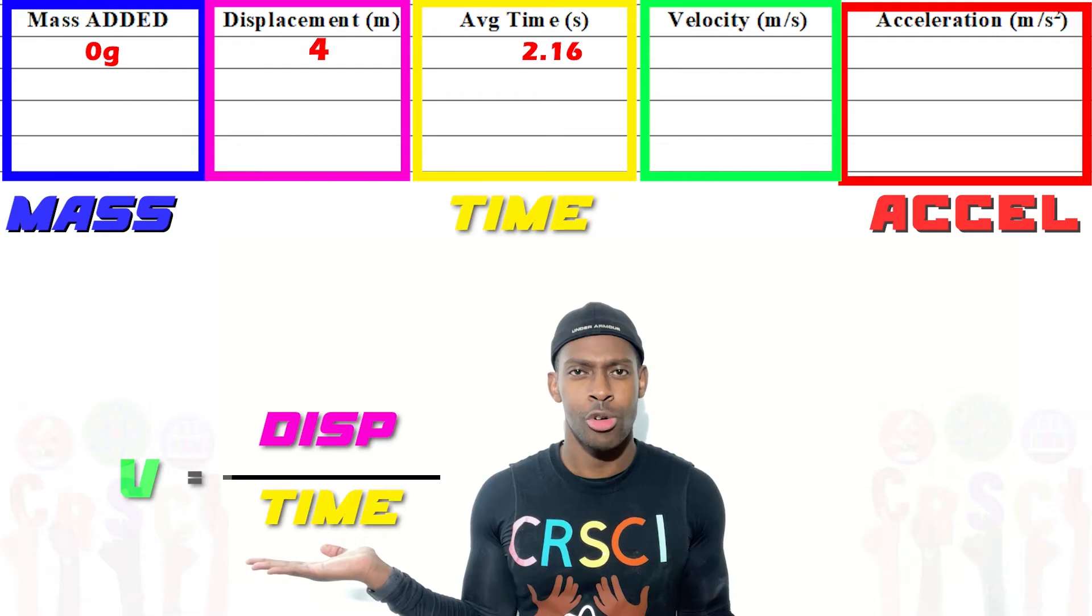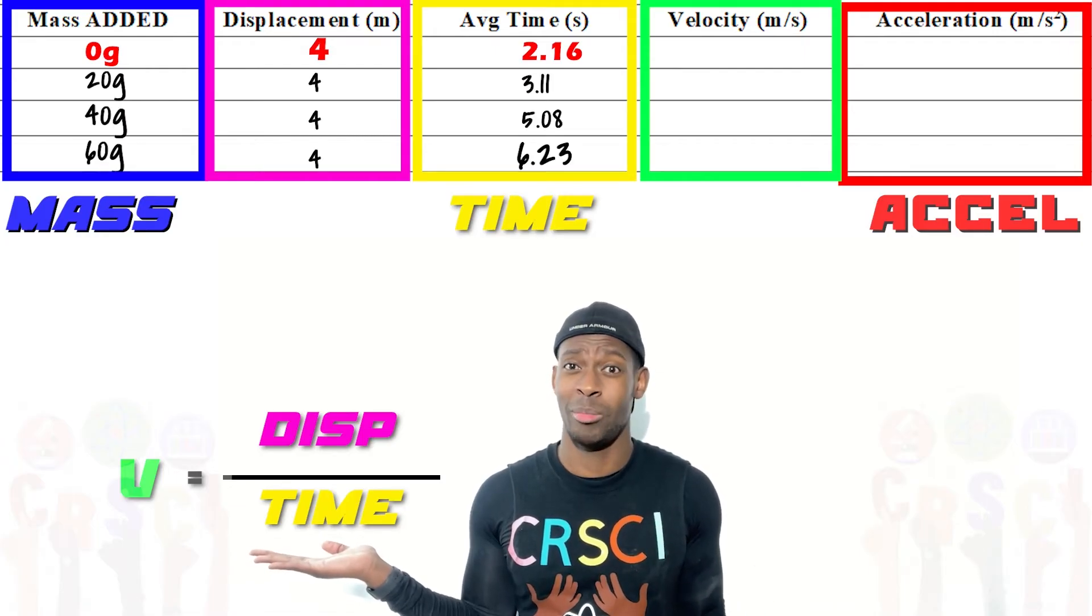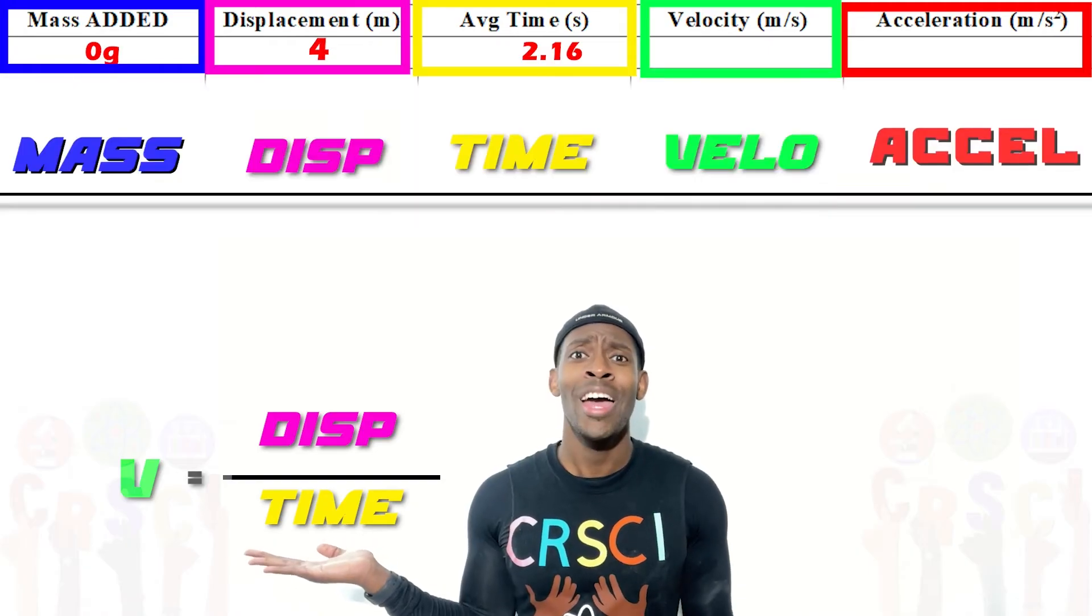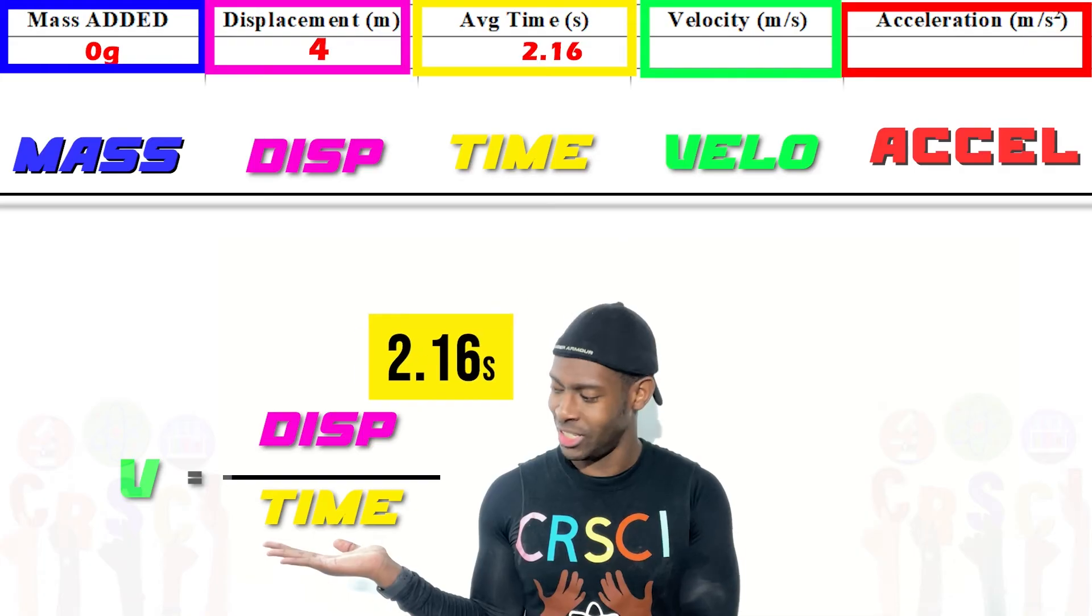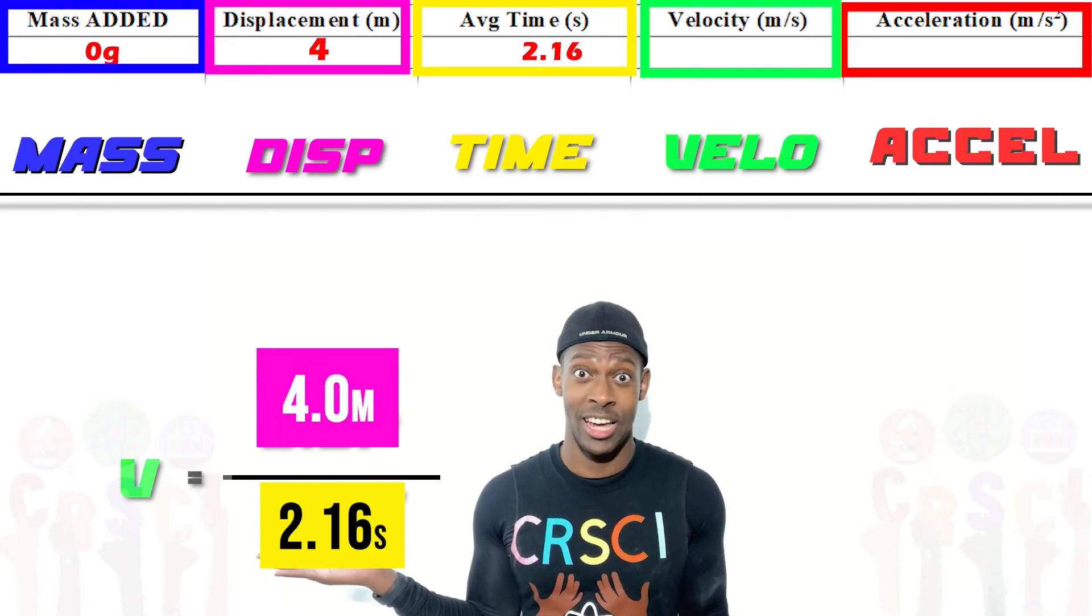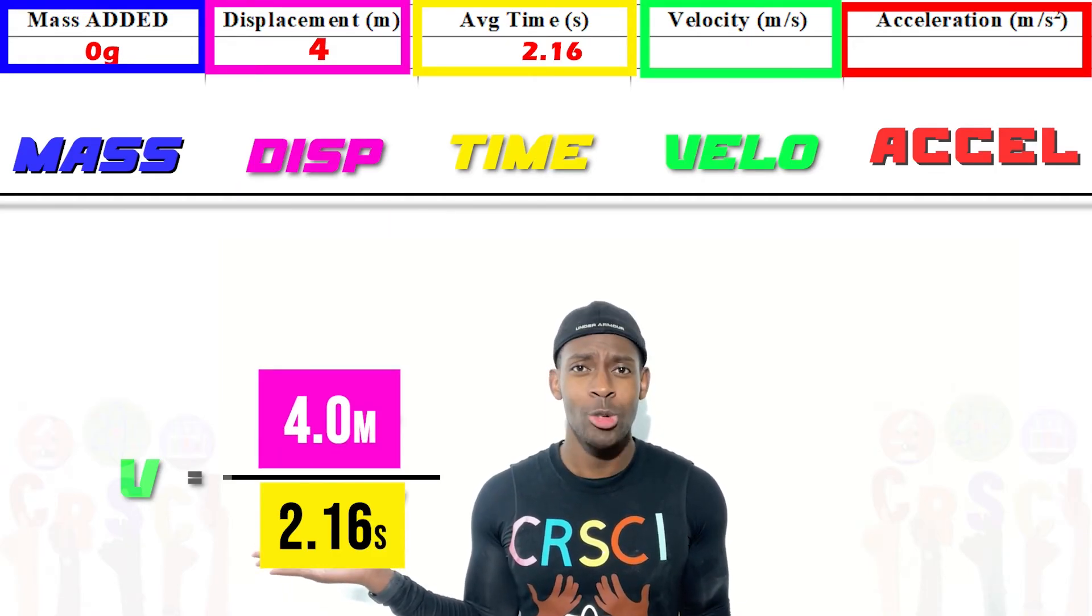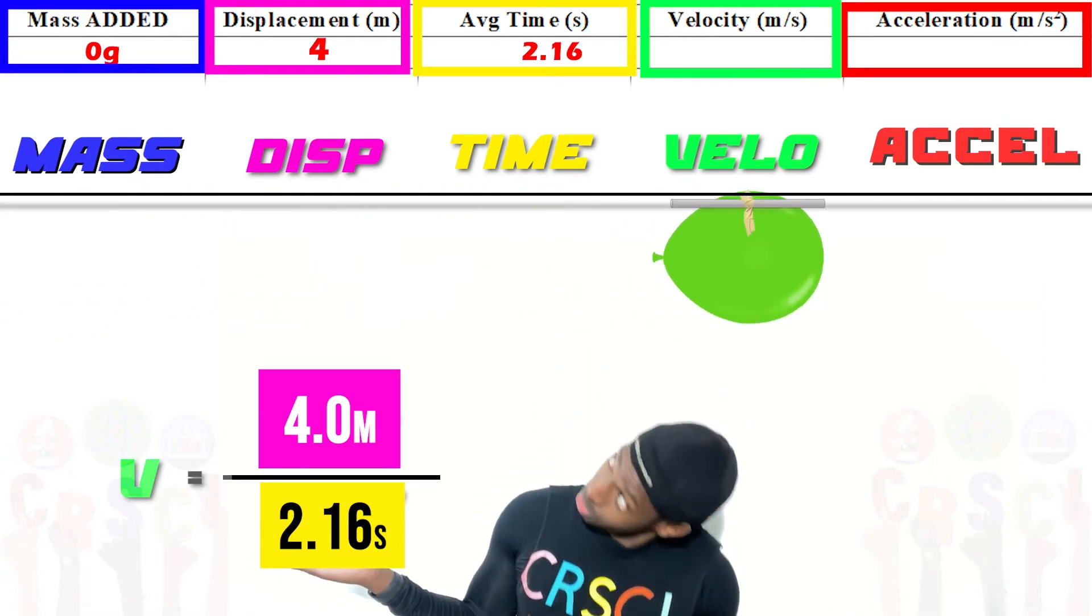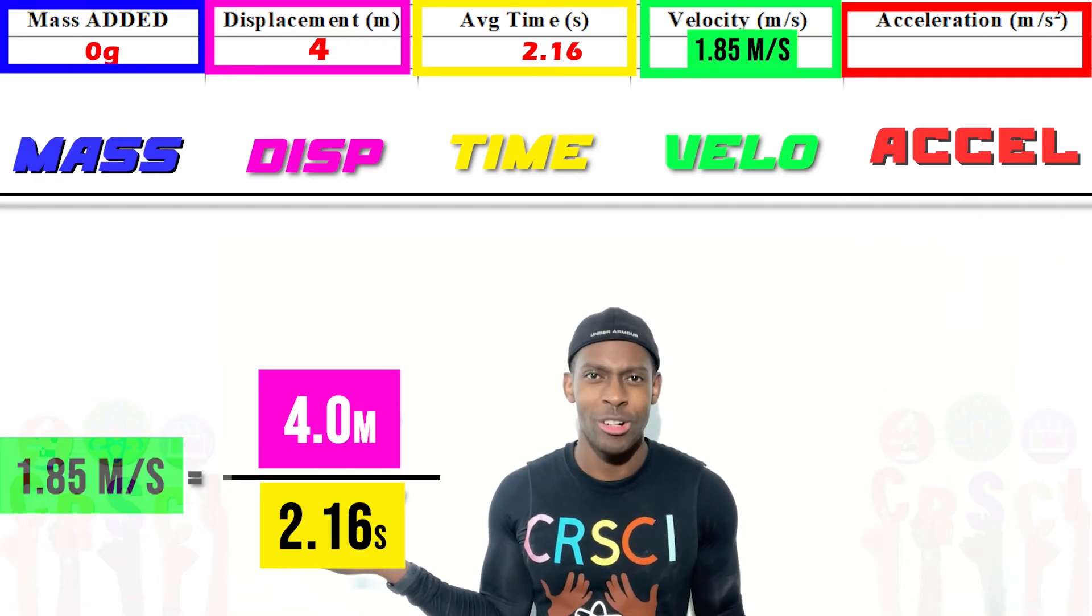So we'll do the first trial, and I'll let you do the rest on your own because I'm not about to be here doing math all day. So it took 2.16 seconds for the balloon to travel four meters when there was no mass added. Four divided by 2.16 seconds, you will get the velocity was 1.85 meters per second.